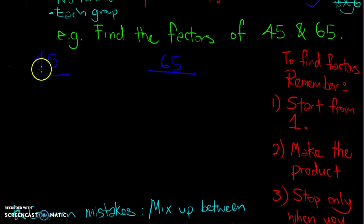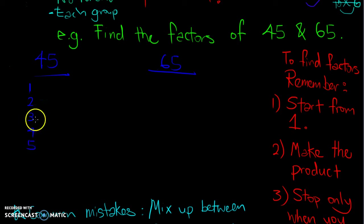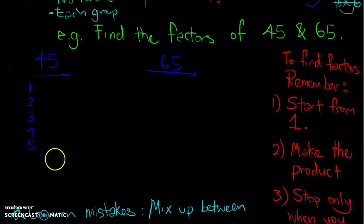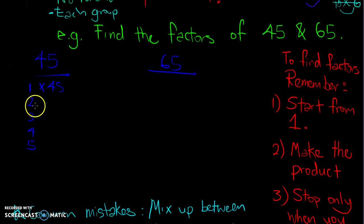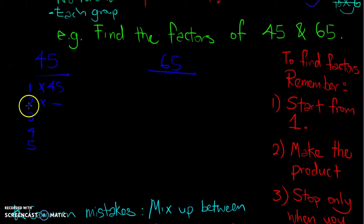I always start with 1, then continue: 2, 3, 4, 5 — it's a bit like guess and check. We go through all numbers until we hit a certain stopping point. 1 multiplied by 45 gives us 45. Next, 2: can I multiply it by anything to give me 45? No, because 45 divided by 2 gives a remainder, so 2 is not a factor of 45.